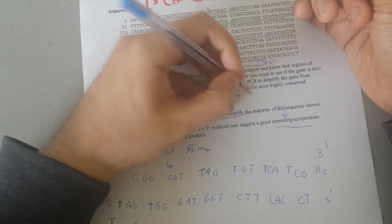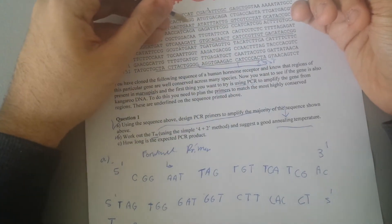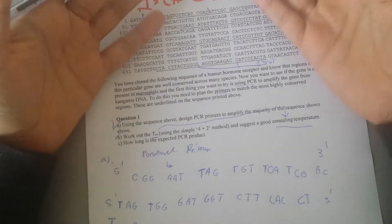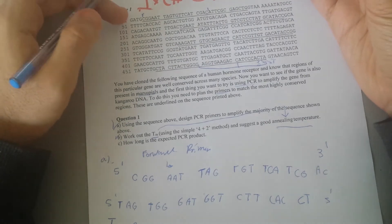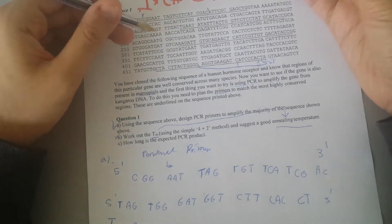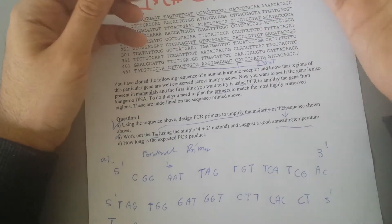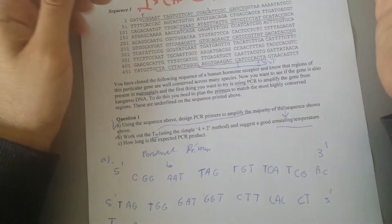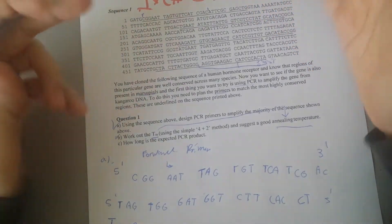To do this, you need to design a pair of primers to match the most highly conserved regions which are those underlined. You want to design a primer that can amplify these regions conserved across many species, then you want to see if that conserved sequence that you amplified is also present in the marsupials.